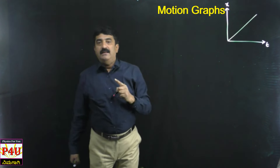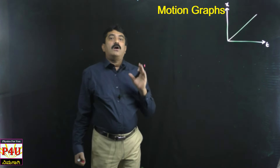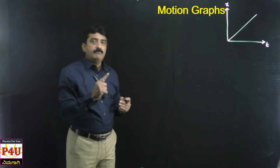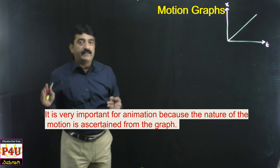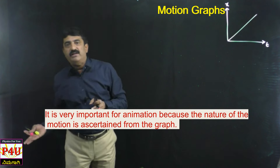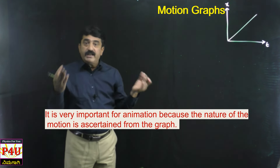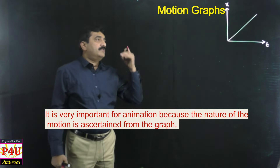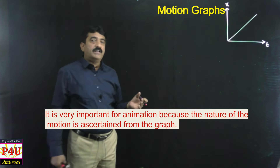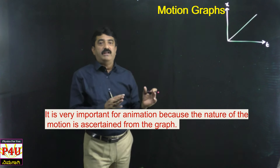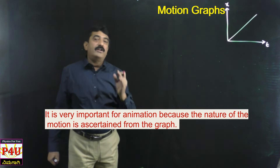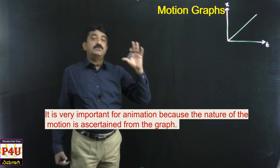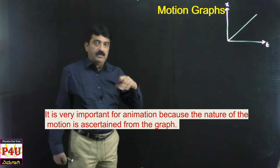If the motion-time graph is a straight line, it tells that the body is moving with constant velocity. The role of motion graphs in animation is very important. An animator may not know whether the body is moving with constant velocity, constant acceleration, or zero velocity. From the graph, he can make out that this is a body moving with uniform velocity and zero acceleration.